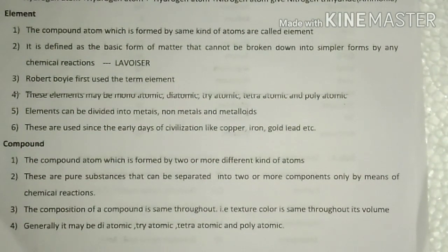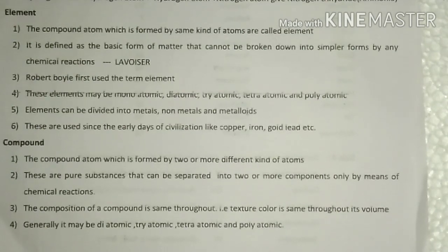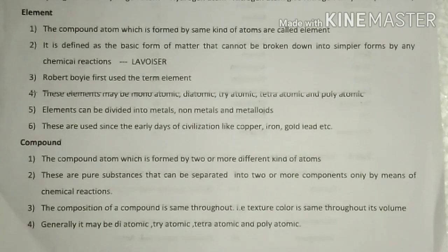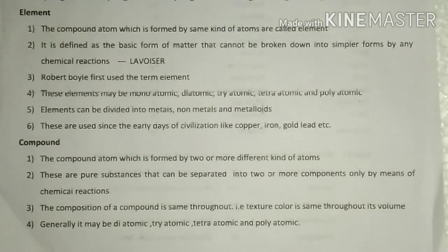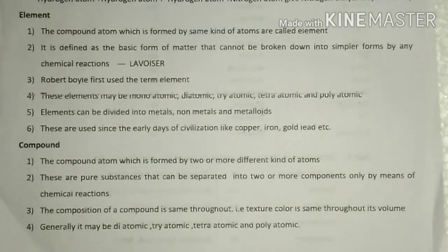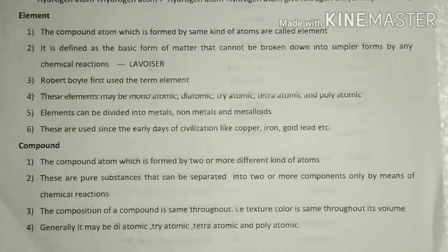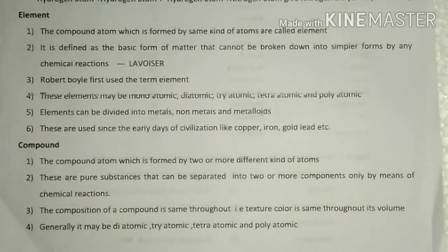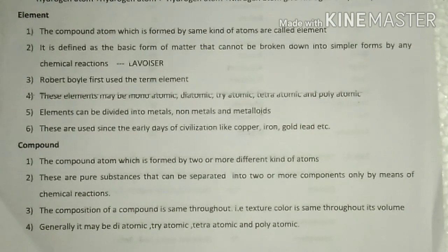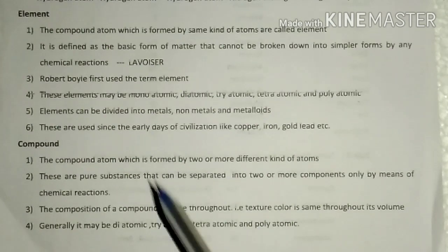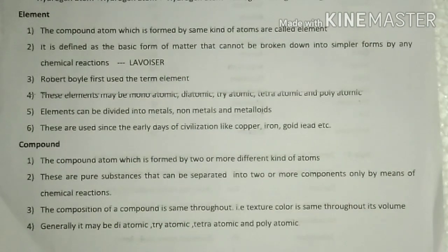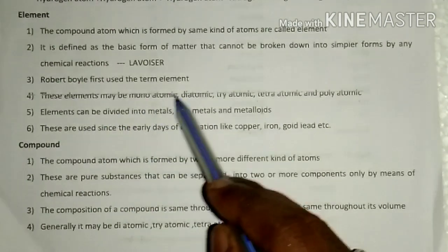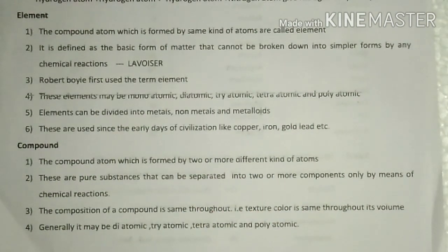Element is a basic unit. For example, if we consider H2O — water — by passing electricity through it, it will be split into two gases: hydrogen gas and oxygen gas. So H2O is an example of a compound. Whereas if we consider carbon, it is an element, because it cannot be broken down into simpler parts by any kind of reaction. The term 'element' was used first by Robert Boyle.